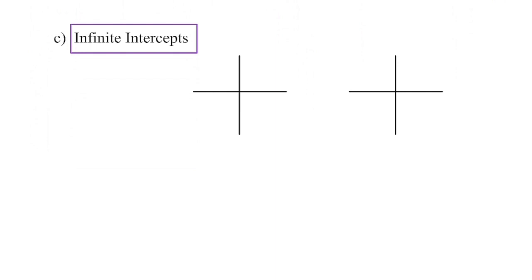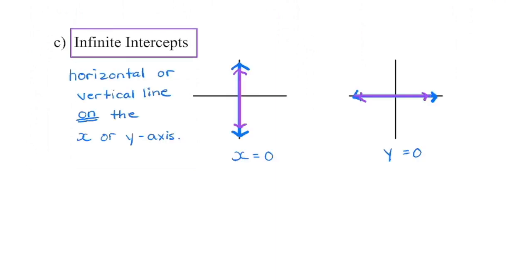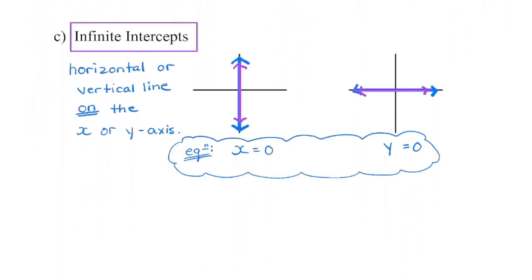We can also have a linear graph that has an infinite number of intercepts. How is that graph going to look? We're going to have infinite number of intercepts if our graph is lying right on either the x or the y-axis. Remember that the equation for all vertical lines begin with x equals. We are crossing the x-axis at zero. The equation for all horizontal lines begins with y equals. We are crossing the y-axis at zero.